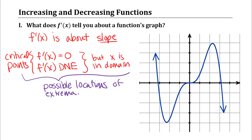We've talked about where the first derivative is zero or does not exist but x is in the domain. On the graph shown, the domain appears to be all real numbers with no undefined places. So for this function, any place where the derivative is zero or does not exist would be a critical point. Looking at that graph, you should be able to identify three places where the derivative appears to be zero — places where the slope of the tangent line is zero.